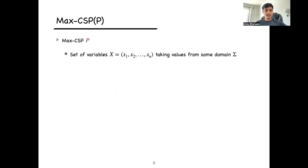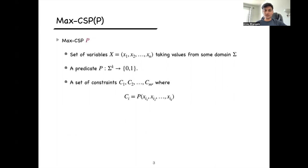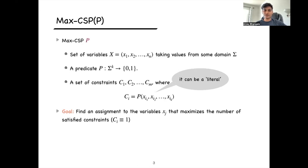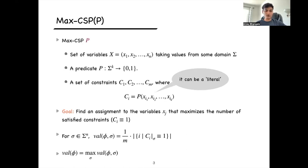In a max CSP, you are given a predicate P and a set of variables X1 to Xn taking values from some domain sigma. The predicate P maps sigma to the K to {0,1}, telling us which assignments are satisfying. We have a set of constraints where each constraint applies predicate P to K variables, and variables can be replaced by literals. The goal is to find an assignment maximizing the number of satisfied constraints. For an assignment sigma, the value of an instance is the fraction of constraints satisfied, and the value of the instance is the maximum over all assignments.